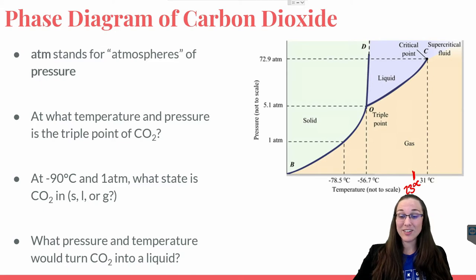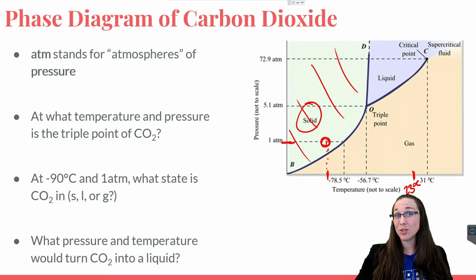So let me give you an example of how to read this. At negative 90 degrees Celsius, somewhere around here, and at one ATM pressure, what would the state be? Well, looks like we would be within this solid region, so we would say that CO2 would be a solid.